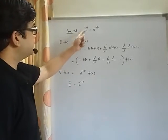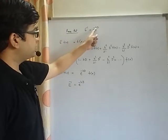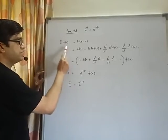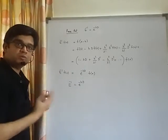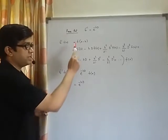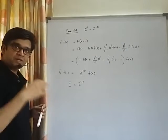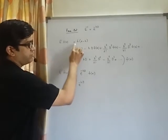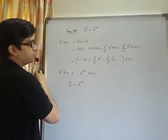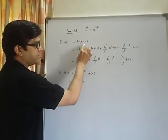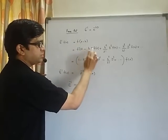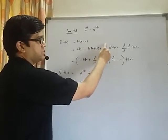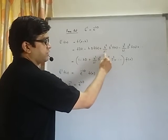The next question is to prove that E⁻¹ = e^(-hD). Now E⁻¹f(x) is f(x - h). Using Taylor series expansion, f(x - h) = f(x) - h·f'(x) + (h²/2!)·f''(x) - and so on.